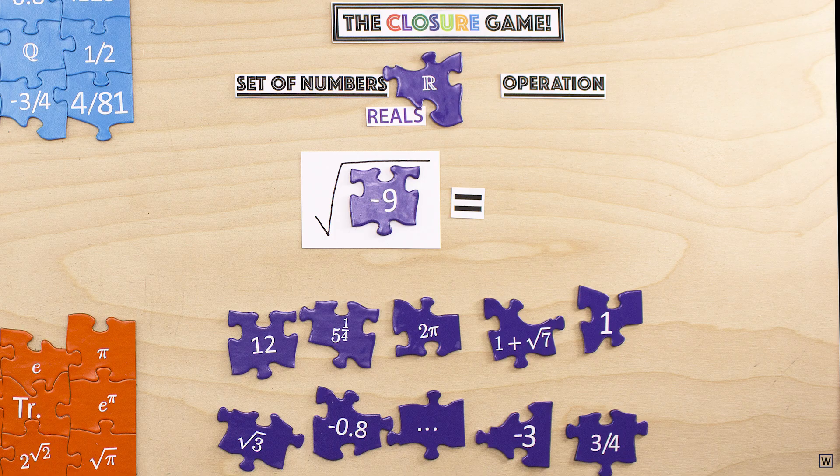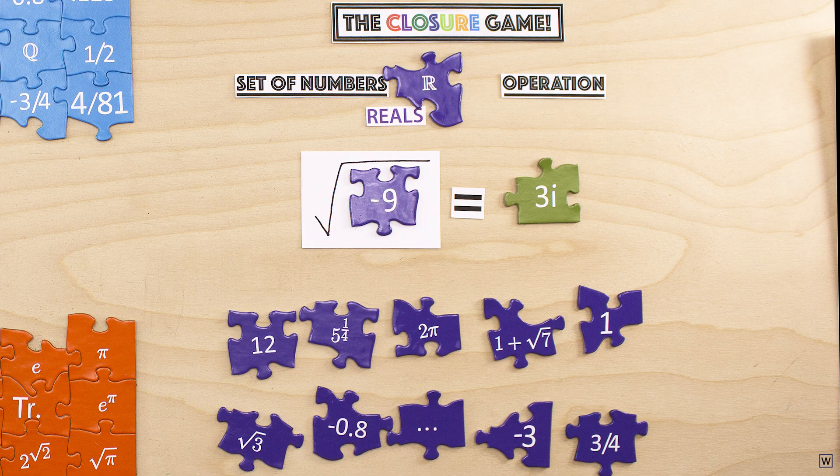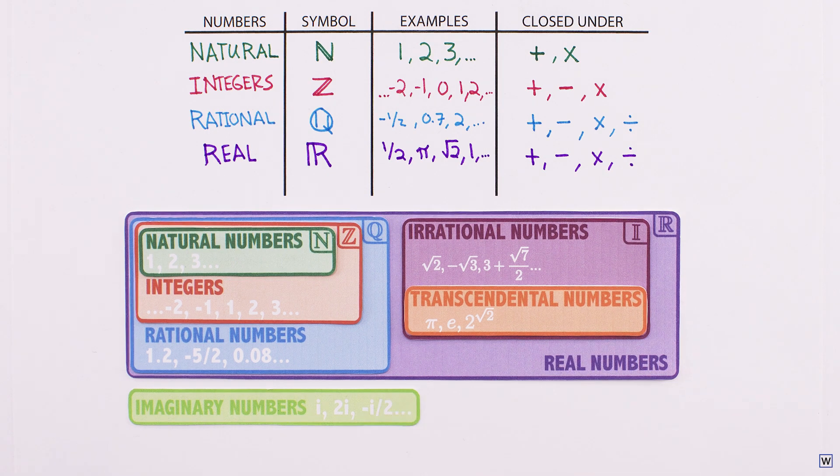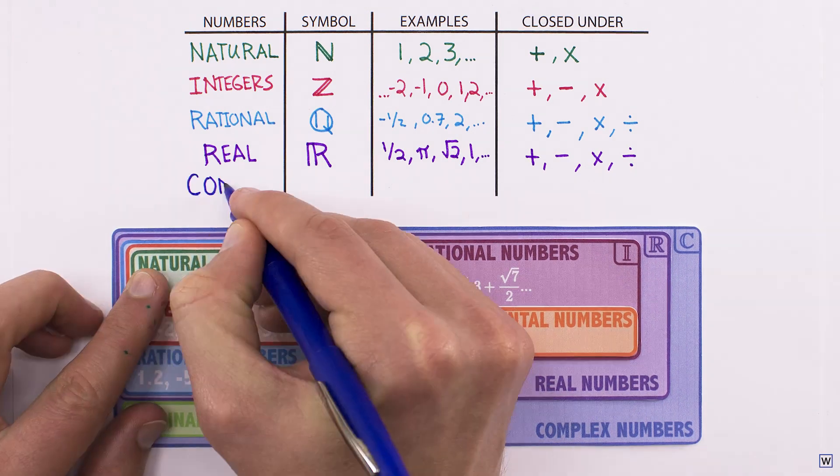For this problem to have an answer, we must expand our number system once more to include imaginary numbers. And taking all our real numbers from before, together with imaginary numbers, we arrive at our broadest class of numbers, the complex numbers.